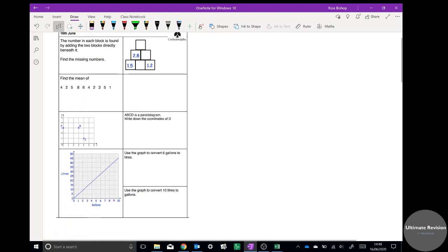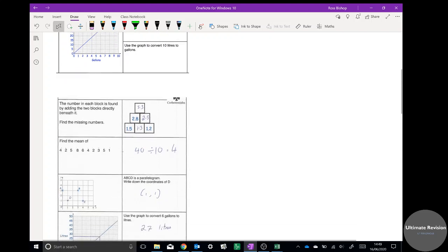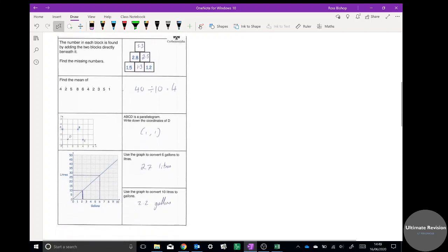Alright, that's about time. Here are the answers, that was just to get you warmed up. A little bit of decimals at the top there, hopefully no issues with this: 5.3, 2.5, 1.3. The mean, you add them all up and divide by 10 because there's 10 numbers.